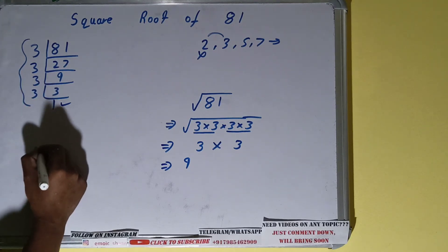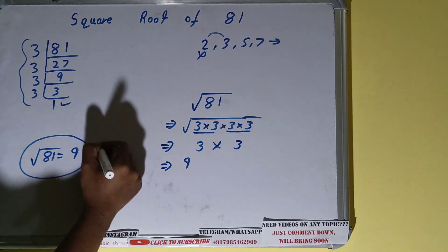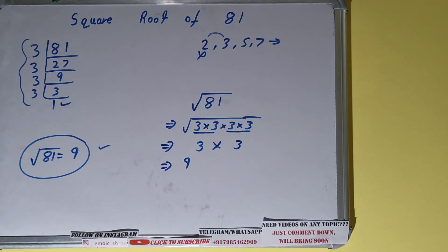So square root of 81 is equals to 9. That's your answer. If you found the video helpful, please do hit the like button, do consider subscribing, and thanks for watching.